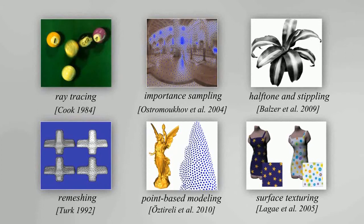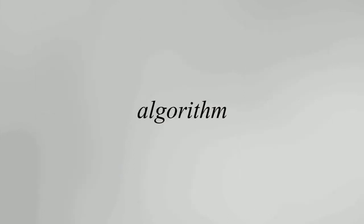Blue noise refers to sample distributions that are random and uniform. It has been widely studied with many important applications. However, prior blue noise methods might not handle features well. We present bilateral blue noise sampling to address this issue.